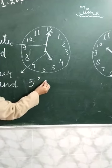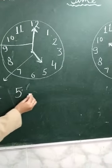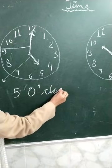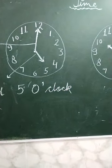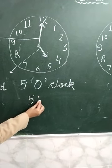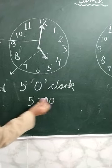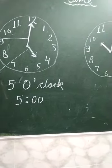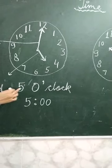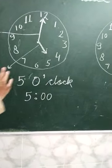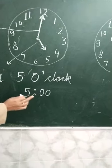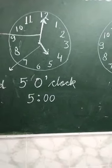We can write five o'clock like this: write 'five', then a big O, then an apostrophe, then 'clock'. There is also another way to write the time: write '5', put a colon, then '00'. These are the two ways you can tell and write the time. When somebody asks what is the time, you will say five o'clock, written as '5 o'clock' or '5:00'.